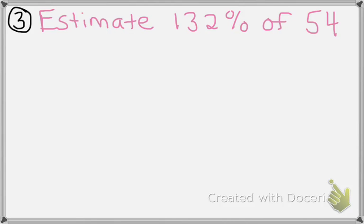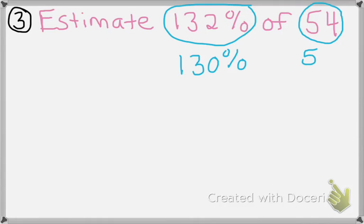So in this case, we're actually going to be estimating or approximating both numbers. So 132%, we can actually change to 130%. And 54, now you can change it to 50 or to 55. I'd rather do 50, but like I said, if your answer's in the same range as mine, it's going to be correct.